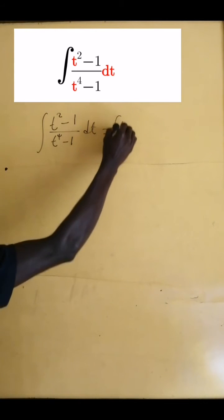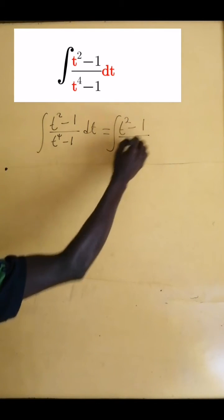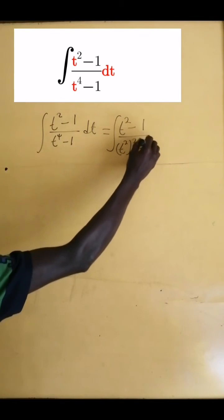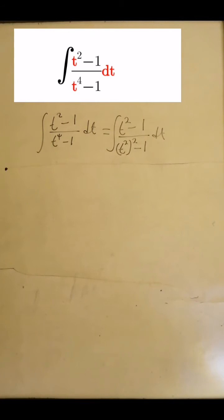We can rewrite this one as t squared minus 1 divided by t squared all squared minus 1 dt.